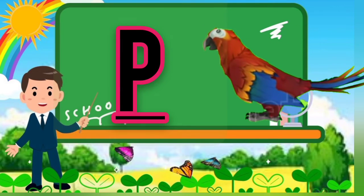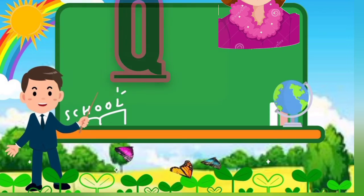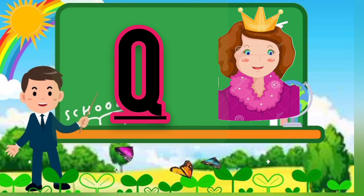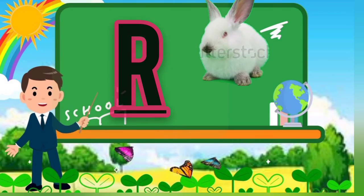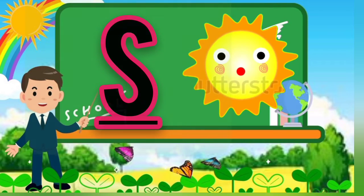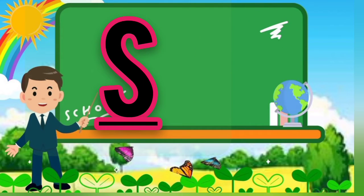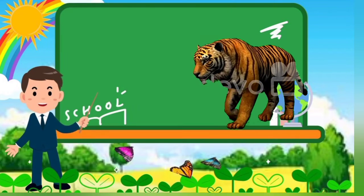P, P for parrot, Q, Q for queen, R, R for rabbit, S, S for sun, T, T for tiger.